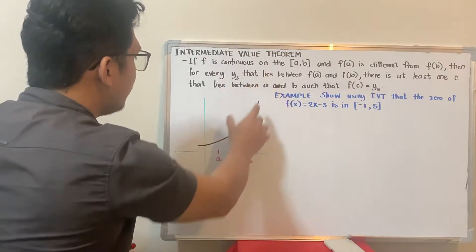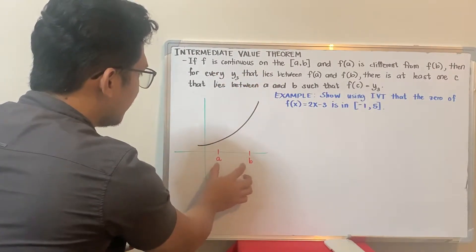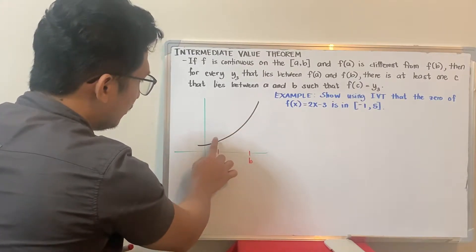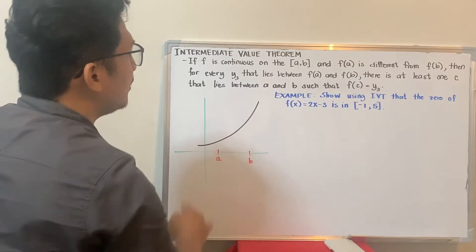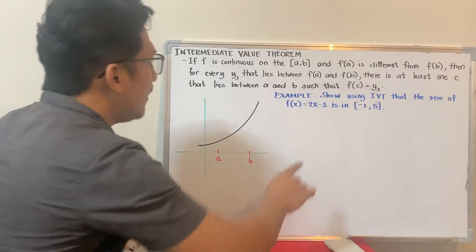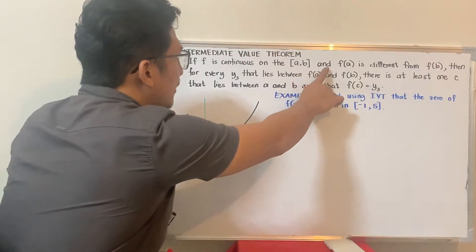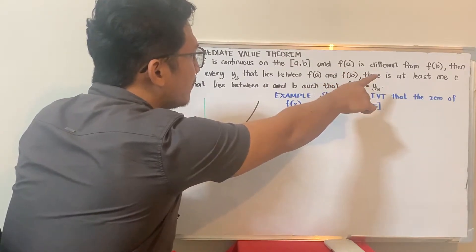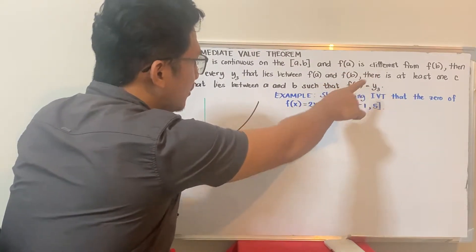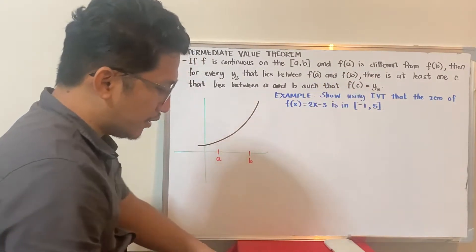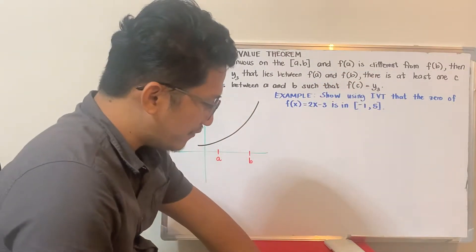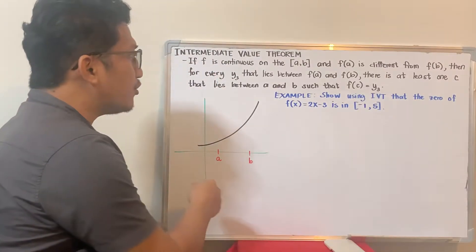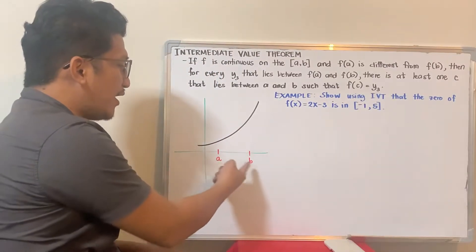Assuming the function is continuous on the interval — meaning there is no break, it is continuous. And f(a) is different from f(b), so the y-values are different when you substitute a and b.